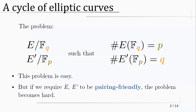What is more interesting is the case of pairing-friendly curves — we want both curves to be pairing-friendly, meaning it is efficient to compute a pairing on these curves. In concrete terms, this means there is a concrete arithmetic relation between p and q. This is the hard version of the problem.